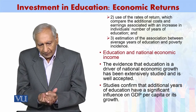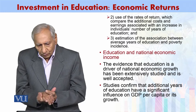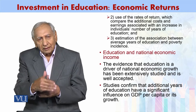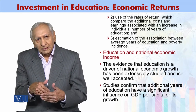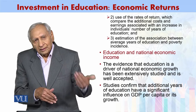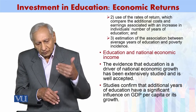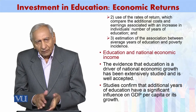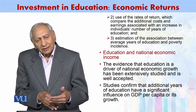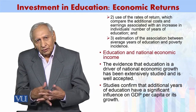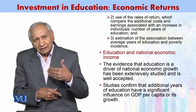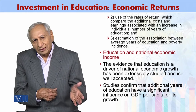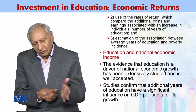The second is use of the rate of returns, which compares the additional costs and earnings associated with an increase in the individual's number of years of education — the more years we add, the more cost it carries, and we then relate whether returns are higher, equal, or less than that cost. The third is estimation of the association between the average years of education and the poverty incidence. If there is a strong relationship, then we can manipulate the variable of education so that it brings change in the incidence of poverty.